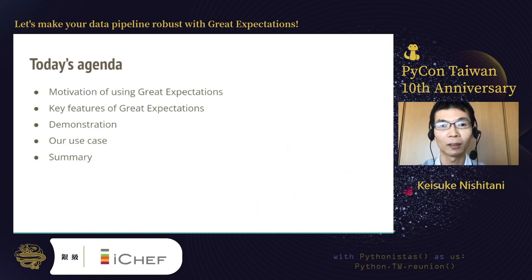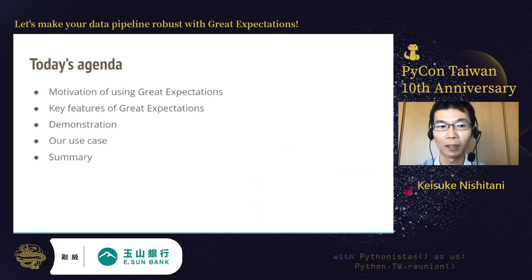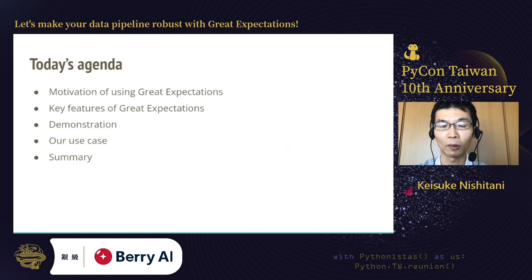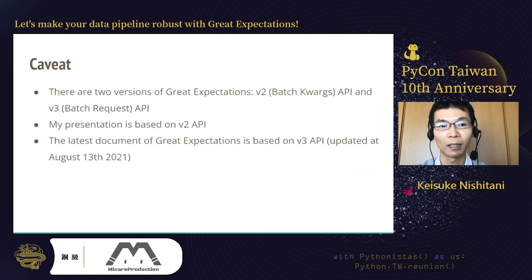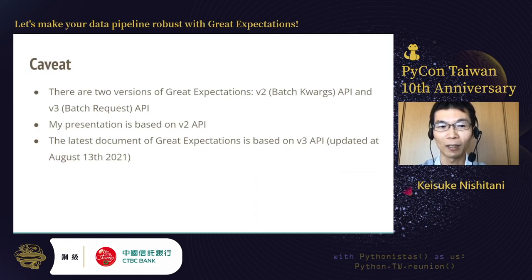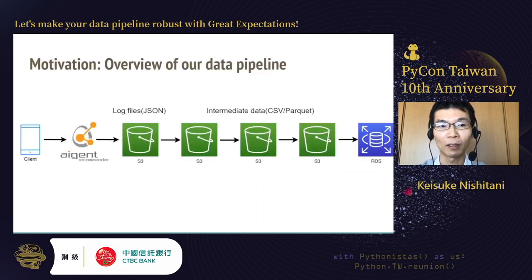Here is today's agenda. First, I'm going to talk about the reason or motivation why we decided to introduce Great Expectations to our ETL pipeline. Next, I'm going to show you the key features of Great Expectations. Then I was going to have a quick demonstration, but I'm sorry, I can't share my window, so I will skip it. Then I'm going to talk about our use case, and finally a quick summary. Also, a quick note: there are two versions of Great Expectations — V2 API and V3 API. My presentation is based on V2 API because we are still using it in production, but the latest documentation was updated to V3 API just two months ago.